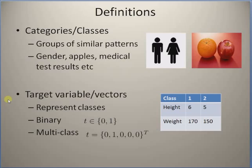Similarly, in the case of fruits, the two more popular groups are apples and oranges. We can have multiple classes or groups in vegetables and also in other types of objects.